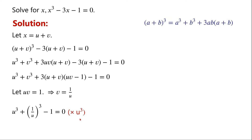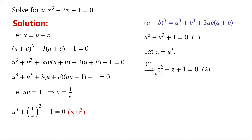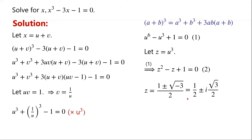Now we multiply the equation by u³. We can write u⁶ minus u³ plus 1 equals 0. Letting z equal u³, equation 1 can be written as z² minus z plus 1 equals 0, which is a quadratic equation. So z equals (1 ± √(−3)) / 2, which equals 1/2 ± (√3 / 2)i. We know that z equals u³.